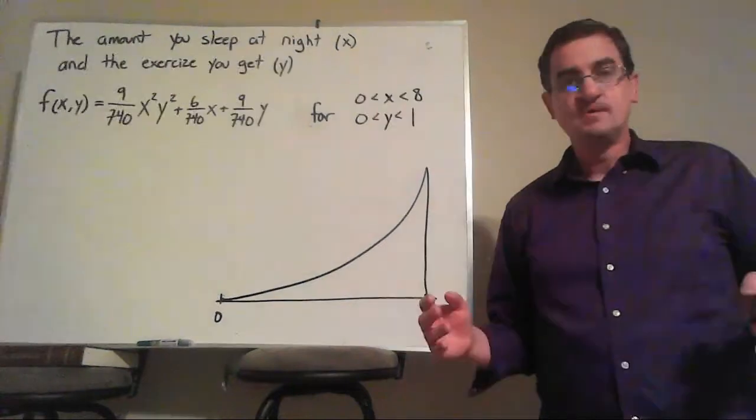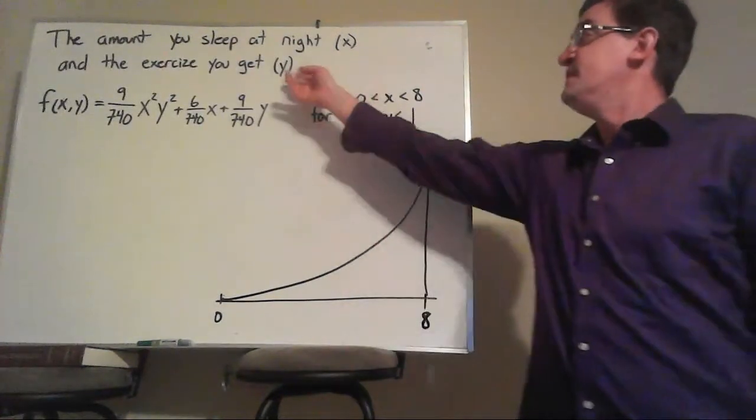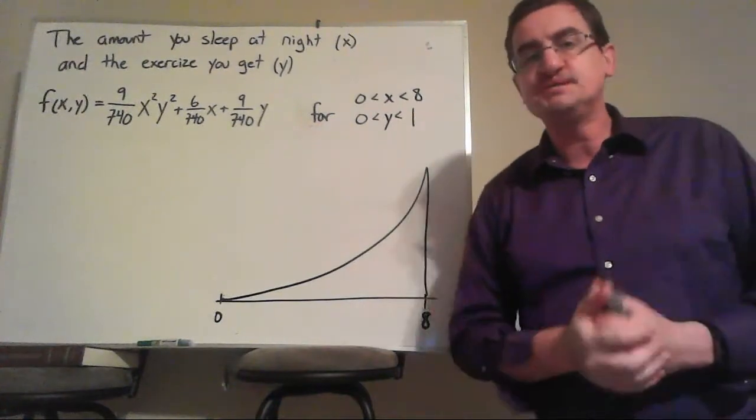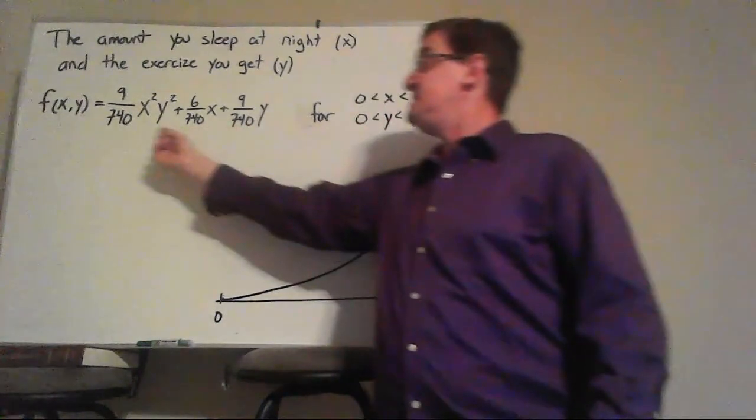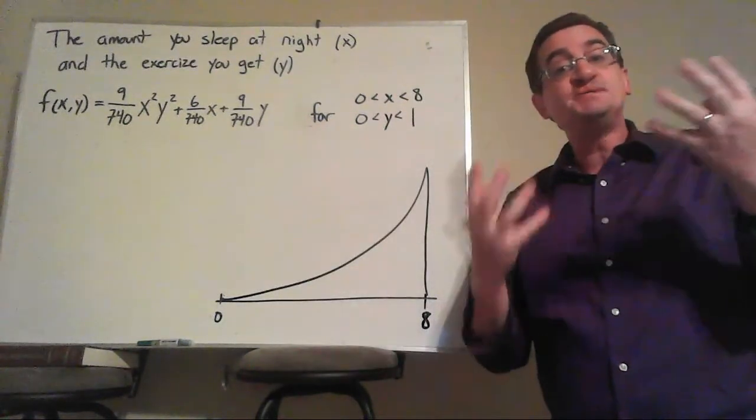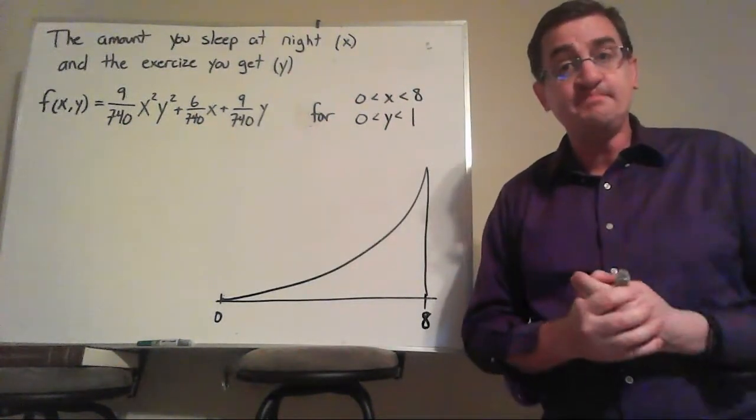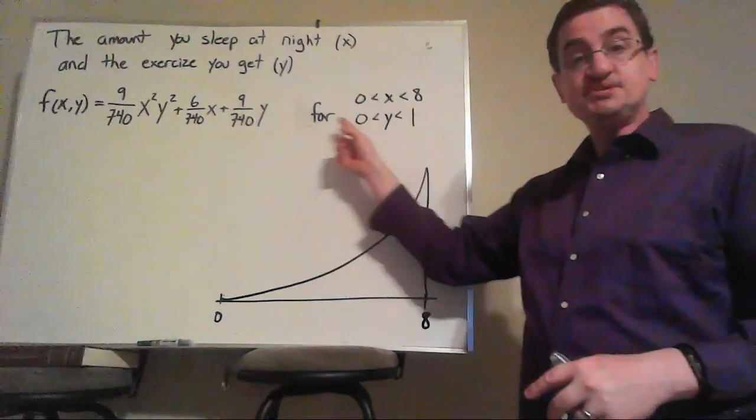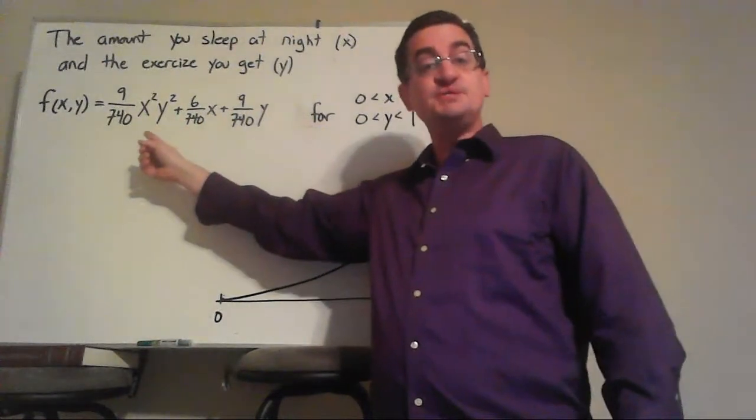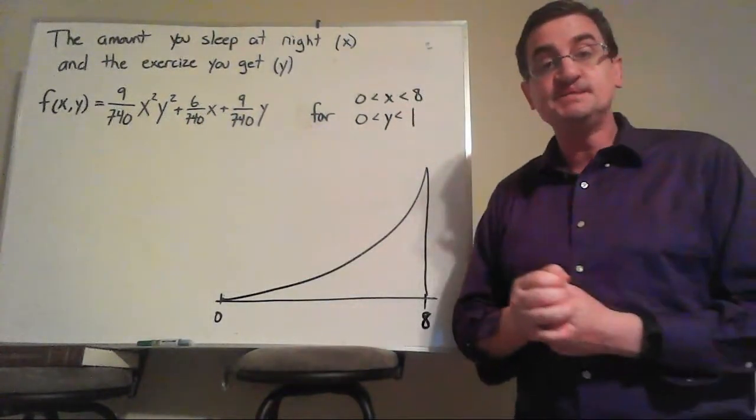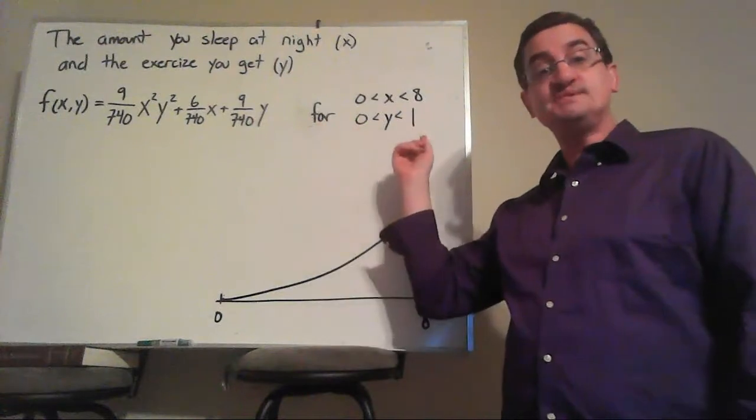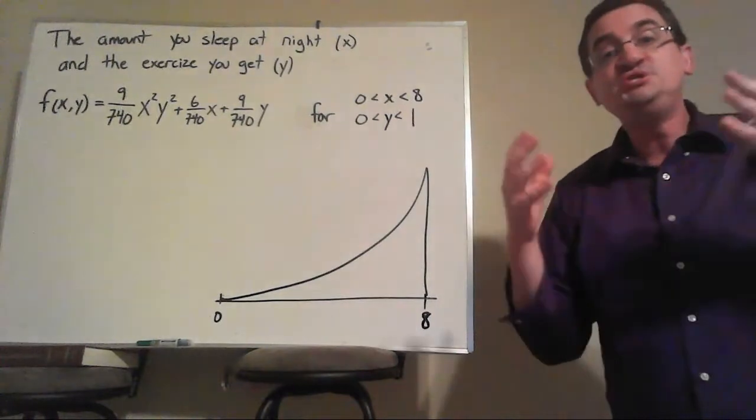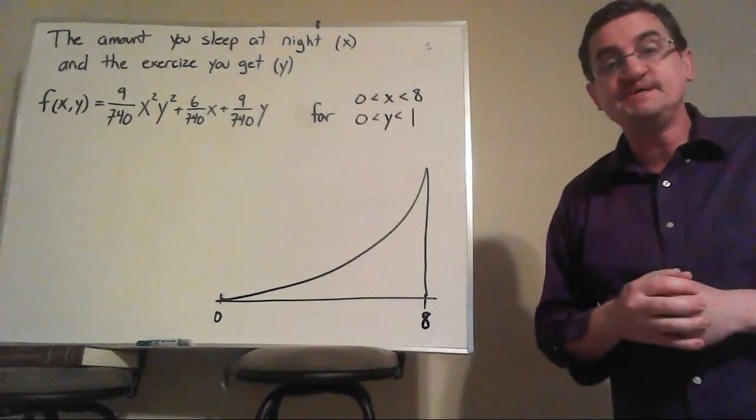But could it be possible that the probabilities depend on something more than just how much you sleep? Could there also be a variable of how much exercise you get? And maybe that's somewhere between 0 and 1 because 1 hour of exercise is your goal. And this is a different probability distribution function that depends on both variables at the same time. You can probably imagine this is a very realistic thing. What happens if you get very little exercise? Well, over here, it's going to sap the probability for being able to sleep. Or if you get lots of exercise, then it will increase the probability of getting more sleep. And so they are a joint distribution because they affect each other.